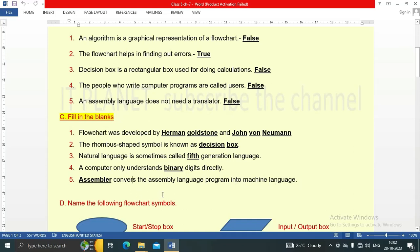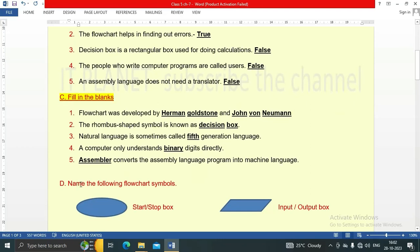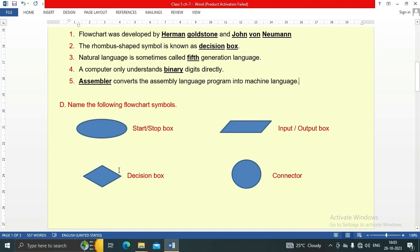Question D: name the following flowchart symbols. Here are some symbols which are used in the flowchart. This symbol is called start stop box. This is an oval shape. This parallelogram shape is used for input output. This rhombus shape is decision box, and this circle is connector.